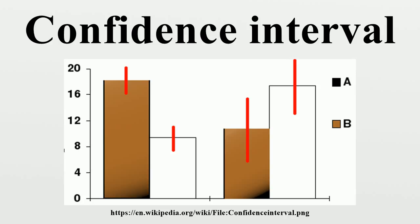When we say we are 99% confident that the true value of the parameter is in our confidence interval, we express that 99% of the hypothetically observed confidence intervals will hold the true value of the parameter. After any particular sample is taken, the population parameter is either in the interval realized or not. It is not a matter of chance.